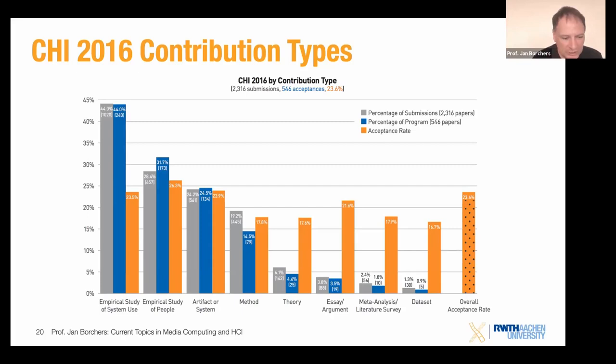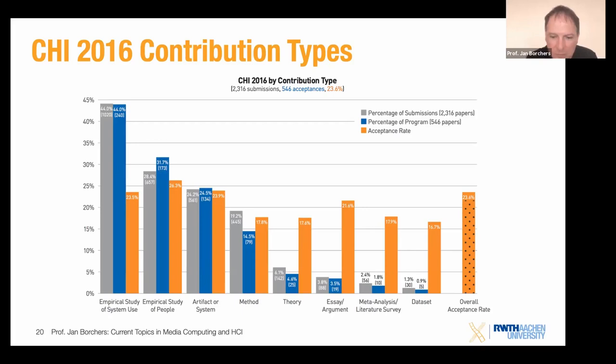That gives you a first glimpse of these contribution types. Don't make the mistake of thinking datasets aren't worth anything because there are so few of them — they're just as valuable as an empirical study or an artifact. It's just that there aren't as many obvious questions that make people write meta-analyses or create datasets as there are empirical studies of systems and people. Those research opportunities are abundant, so a lot of people do that kind of work, and CHI is very comfortable with it and knows exactly how to evaluate it.